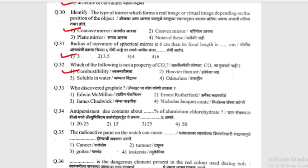Which of the following is not a property of CO2? CO2 is combustible — is it heavier than air, soluble in water, or has no odour? CO2 supports combustion is not a property — CO2 does not support combustion. It is heavier than air, soluble in water, and has no odour.